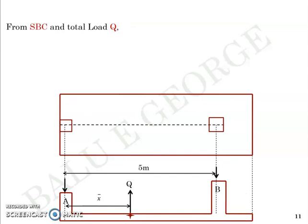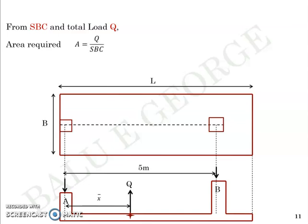Step number two is to find the area required for which you are given with the safe bearing capacity or the allowable pressure and the total load Q, from which you can estimate the area required, which is length into breadth as equal to Q by SBC. So total load Q is 1500 and SBC is 100 kilopascal. Checking consistency of the unit, you get area required to be 15 meter square, which means length multiplied by the breadth of the combined footing after your design process is completed should be at least 15 meter square so that the pressure will be less than 100 kilopascal.